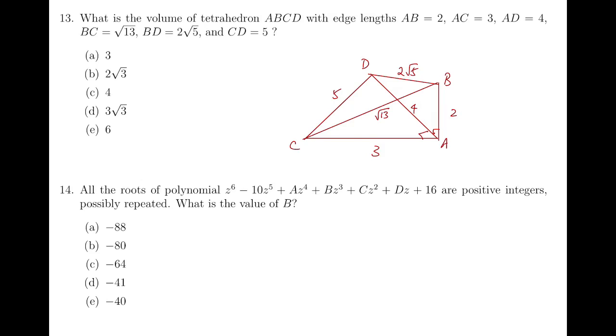We can find the area of the base, which is 3 times 4 over 2 is 6, and then the height is simply AB, which is then 2, so volume is 6 times 2 over 3, and that's 4, the answer is C.